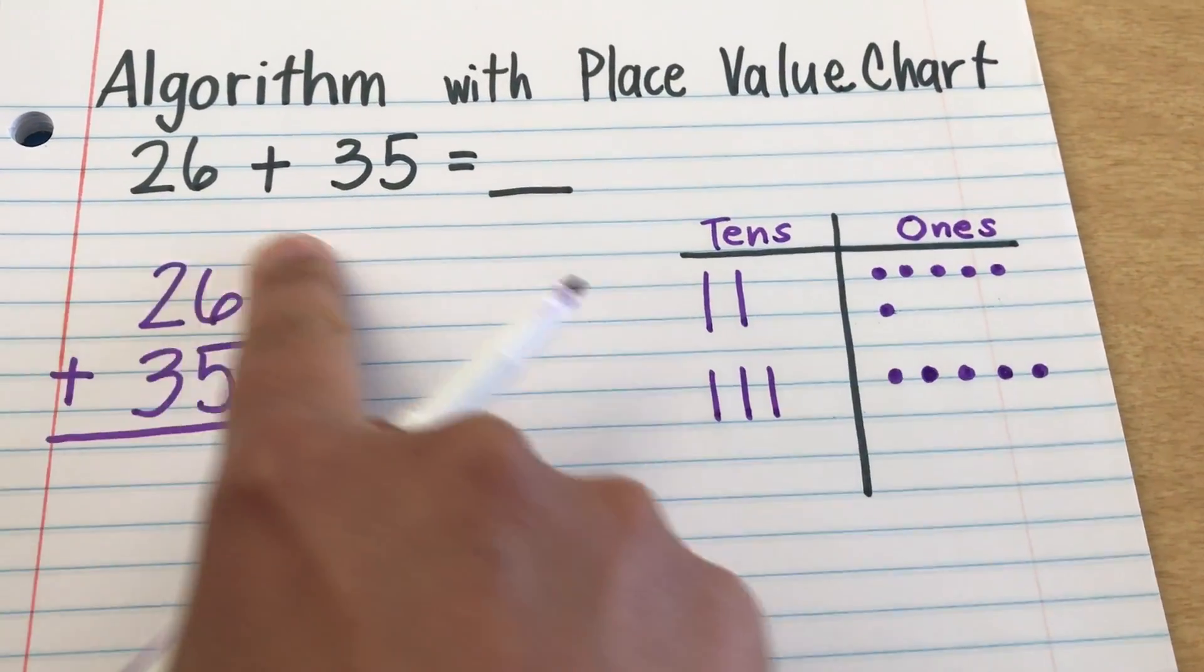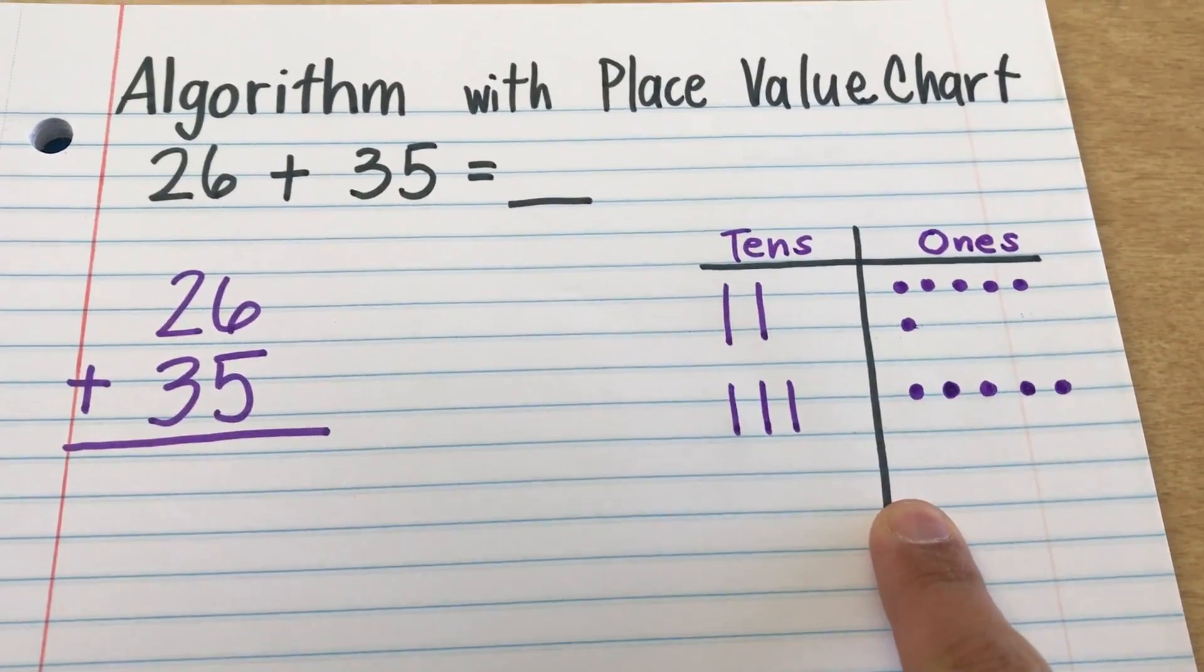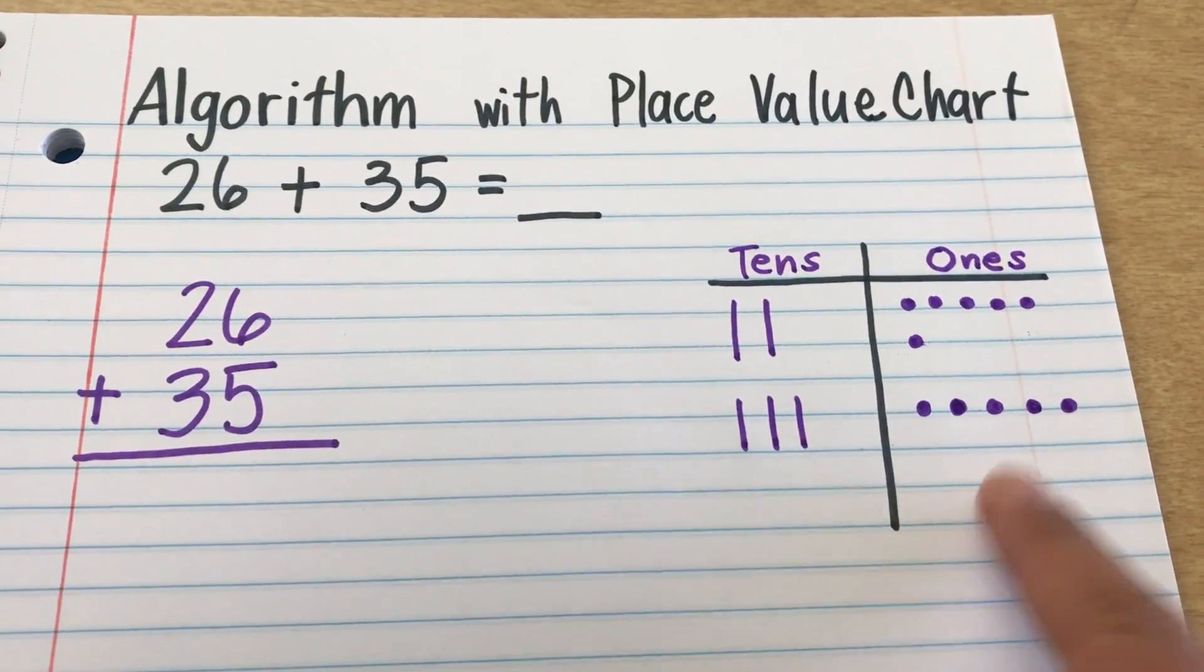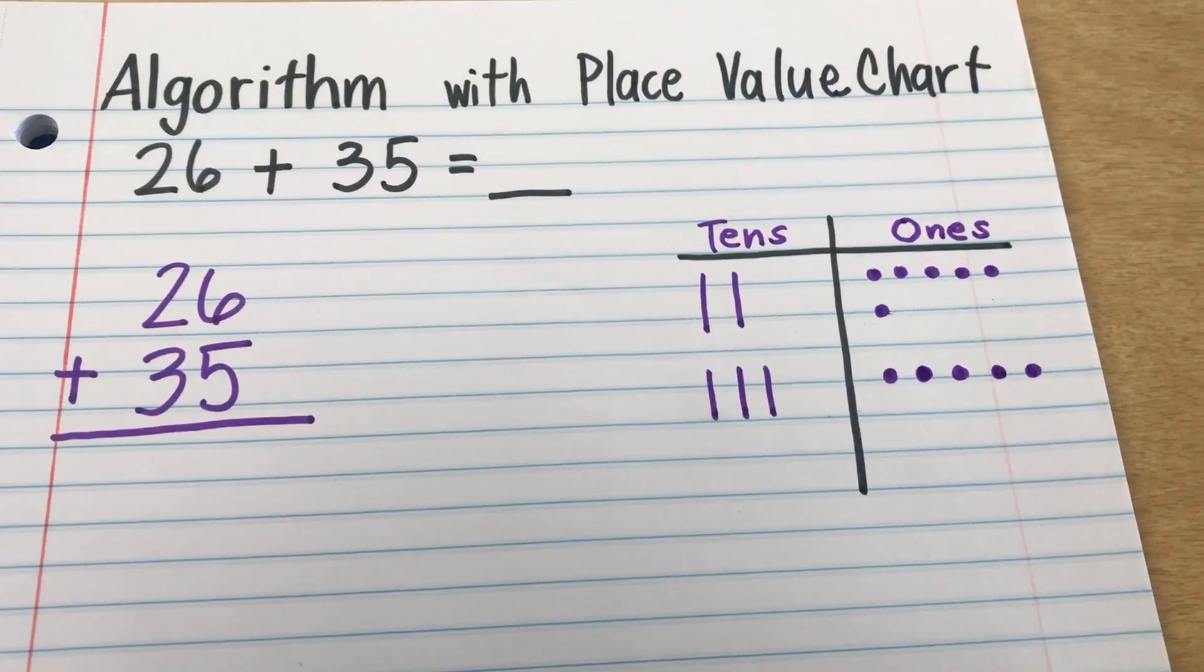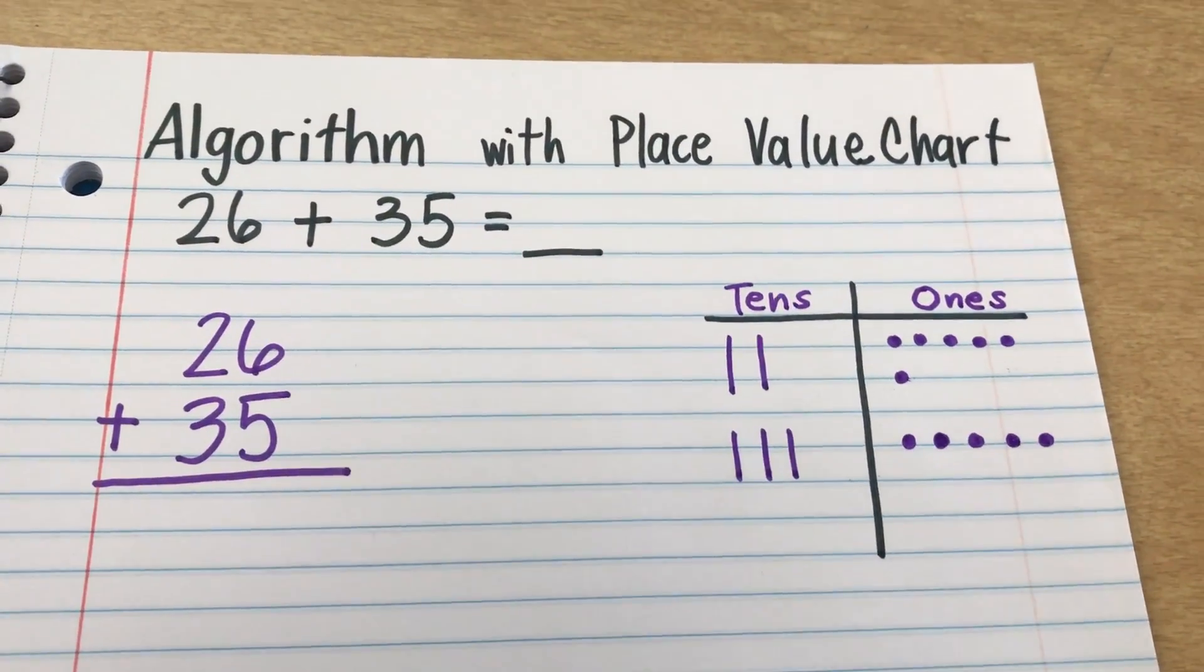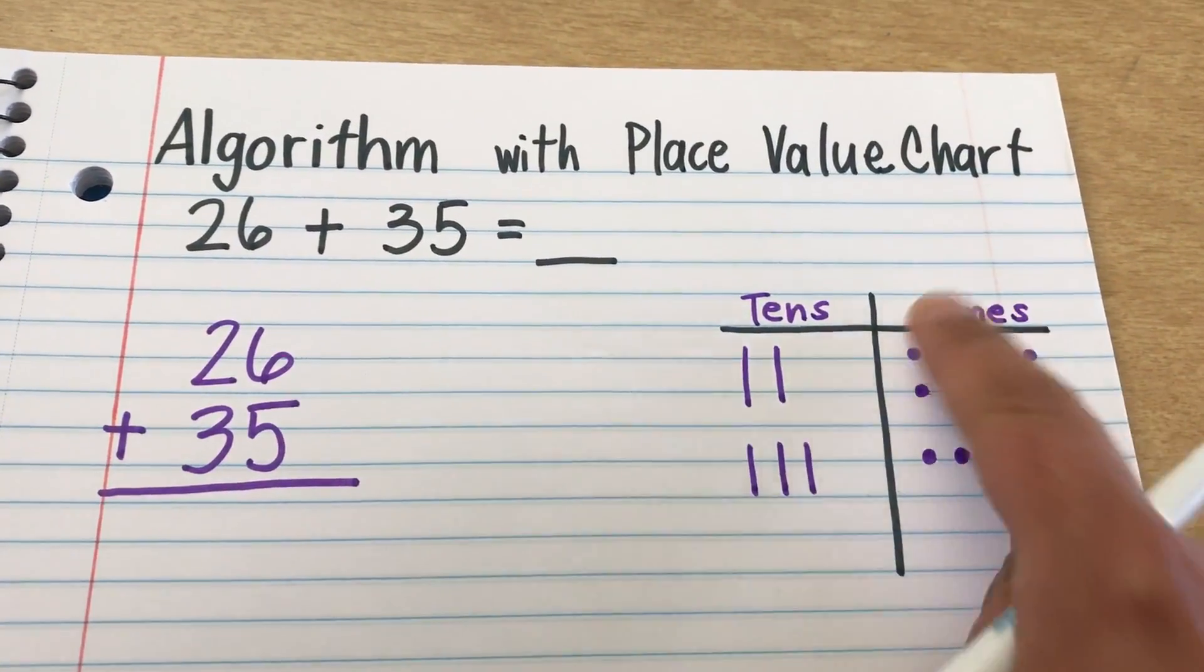Okay, so my algorithm 26 plus 35 is here in numbers. On my pictures, I also have 26 on top, 35 on the bottom. All right, let's start. So, you can start either way. Let's start with the picture.